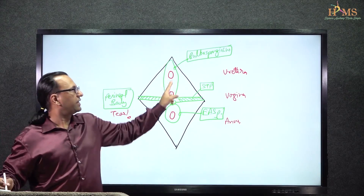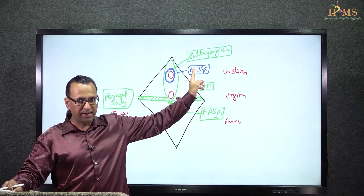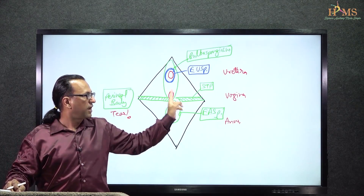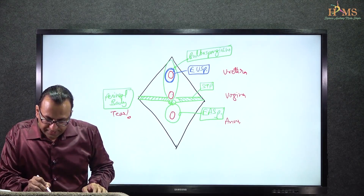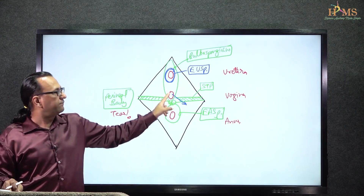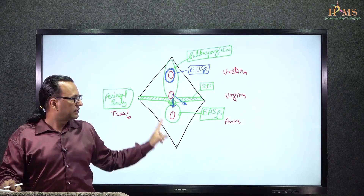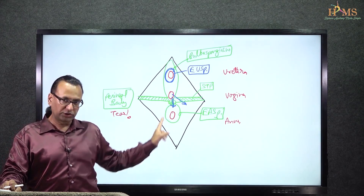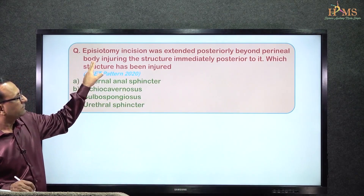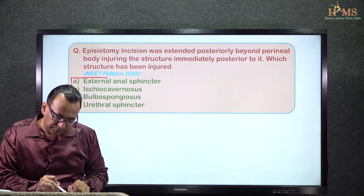When the baby's head is coming through the vagina, you enlarge the vaginal introitus with a mediolateral incision. That incision will cut some muscles in the vaginal wall territory. But if you give a midline incision and extend it posteriorly beyond the perineal body, you might damage the external anal sphincter. That was our question. Going back — the episiotomy extending posteriorly beyond the perineal body, and the structure immediately posterior is the one we have discussed — the external anal sphincter.